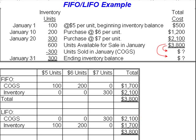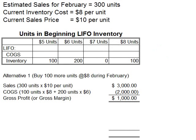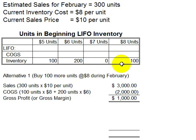However, LIFO creates an opportunity for management to manipulate the income statement. For example, suppose you're the manager of the business we've looked at and sales estimates for February are for 300 units. You presently have 300 units in your inventory, and under LIFO they're composed of the $5 units and the $6 units. You have 300 units in inventory and estimates for 300 units in sales, so you might want to buy another 100 units just to make sure you don't stock out during February.